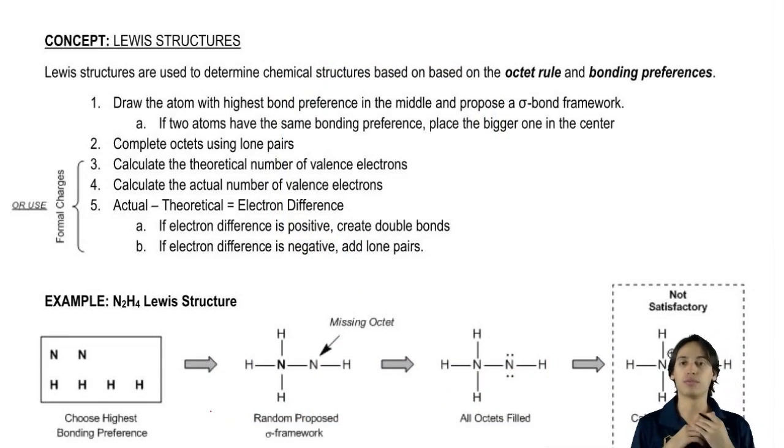Remember that Lewis structures were ways to describe molecules, that everything was drawn explicitly. So that means that all the bonds, all the lone pairs, all the atoms were drawn out perfectly explicitly so you could see everything on the structure.